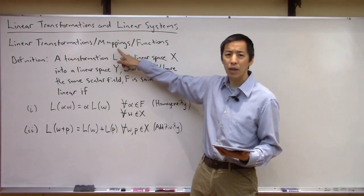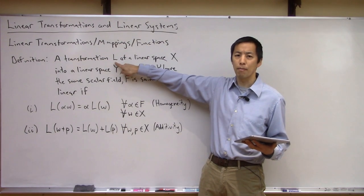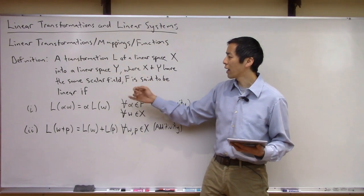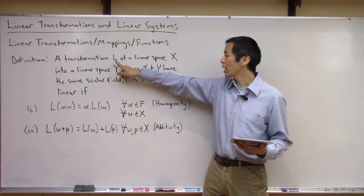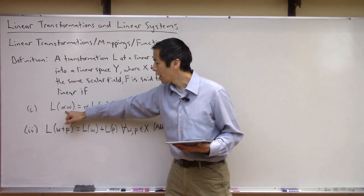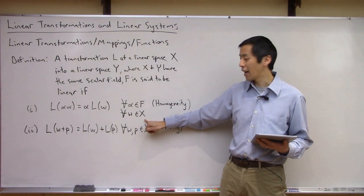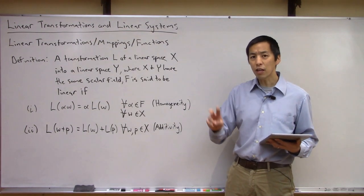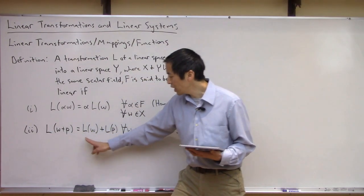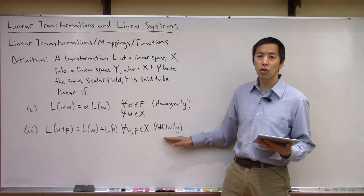A linear transformation is sometimes also referred to as a linear mapping or a linear function. The formal definition: a transformation L, which maps from some linear space X into a linear space Y, where both X and Y have the same scalar field F, is said to be linear if two things occur. First, homogeneity: L(αW) = α·L(W) for every scalar α and every W in X. Second, additivity: L(W+P) = L(W) + L(P) for any W and P in the input space X.